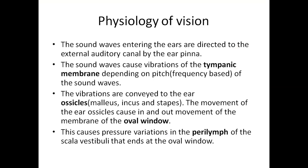Now let us understand exactly what happens when we hear a sound wave. The sound wave enters the ear pinna, which transmits sound waves through the auditory meatus to the tympanic membrane. Depending on the pitch of the sound wave, the tympanic membrane starts vibrating. These vibrations are passed on to the ear ossicles in the middle ear — the malleus, incus, and stapes. Movement of the stapes causes in-and-out movement of the oval window membrane, and once that membrane vibrates, vibrations are passed on to the perilymph in the scala vestibuli.